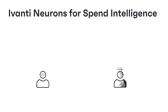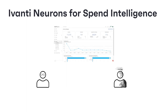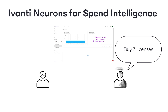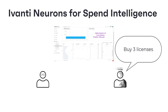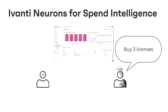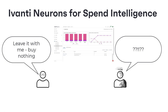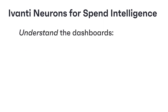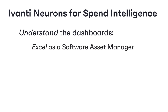In the same way, you can just look at the pretty charts in Ivanti Neurons for Spend Intelligence and report that we've got two spare licenses so we need only buy three more for those new starters. Or you can use the dashboards to understand your software estate and report that we've got two spare licenses but I think I can recover more, so that we don't need to buy any new licenses for those new starters. Making the effort to understand what Ivanti Neurons for Spend Intelligence is showing you will help you to excel at software asset management and can save your organization a lot of money.